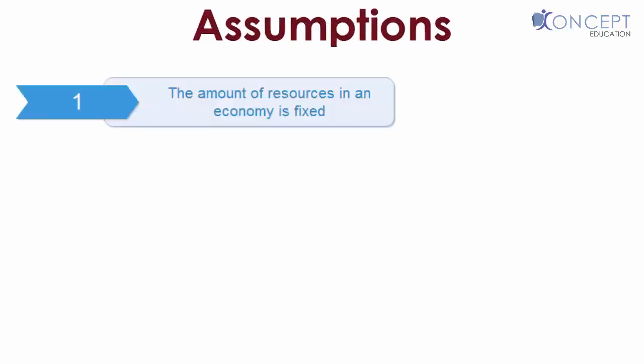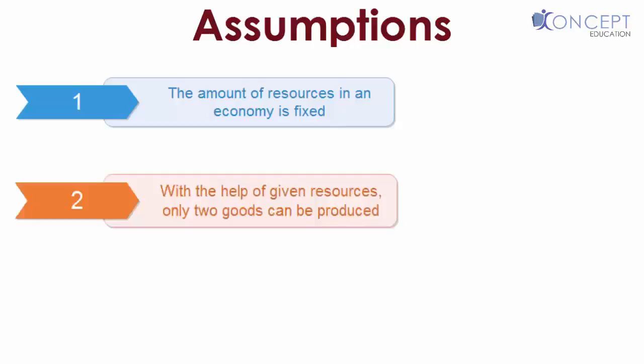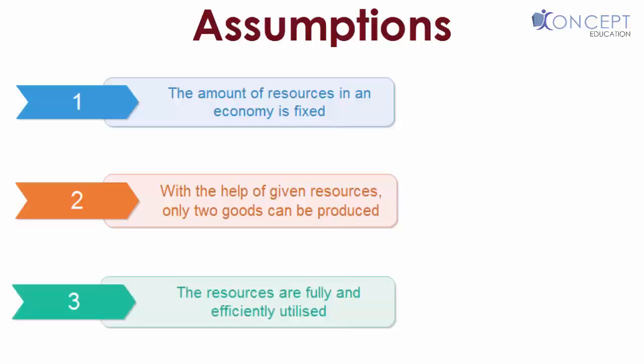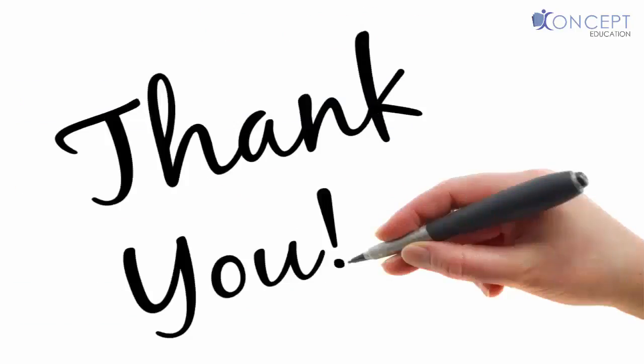Also, in the end, I would like you to know some assumptions on which PPC works. The first assumption: the amount of resources in an economy is fixed. That means every morning when you woke up, when you had to buy toothbrushes and toaster, the amount of capital is fixed. It neither increases nor decreases. Second, with the help of given resources, only two goods can be produced. PPC only works for two goods because it's a graph with only x-axis and y-axis. There is no z-axis. It's not a 3D graph. Third point: the resources are fully and efficiently utilized. There is zero wastage. It never happens that I bought a toaster and I am not able to sell it because it was defective. All the toasters and all the toothbrushes I buy are working in a very good manner. So these are the three assumptions on which PPC works. Now please go and solve MCQs as they are really very important.